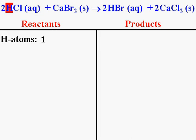However, look to the left of the molecule — there's a two there. That means there are two HCl molecules. So, even though there's only one hydrogen atom in an HCl molecule, I have two HCl molecules. I take the number of hydrogen atoms in an HCl molecule, one, and multiply by the number of HCl molecules I have, two. In the end, there are a total of two hydrogen atoms on the reactant side of the equation.